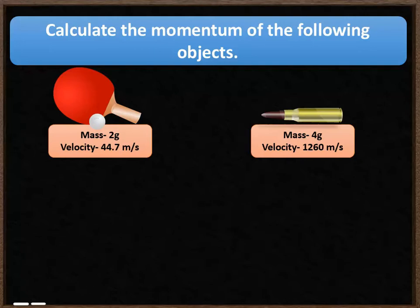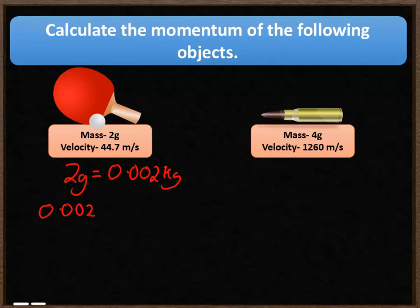For the ping pong ball, its mass is 2 grams. We first convert that to kilograms: 0.002 kg. Using the momentum formula, 0.002 times 44.7 meters per second gives a momentum of 0.0894 kilogram meters per second.